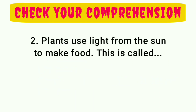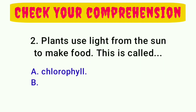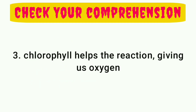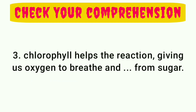Plants use light from the sun to make food. This is called: A, chlorophyll; B, photosynthesis. Chlorophyll helps the reaction, giving us oxygen to breathe and energy from sugar.